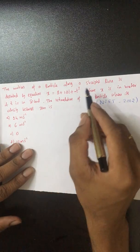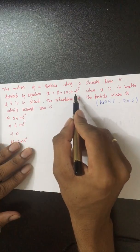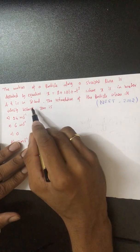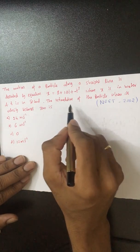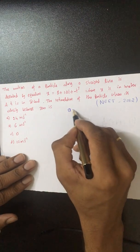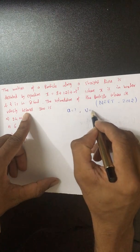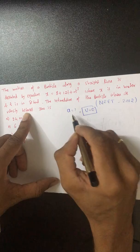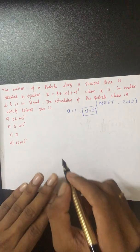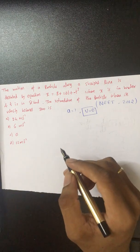We move to the next question. The motion of a particle along a straight line is described by x equals 8 plus 12t minus t cubed, where x is in meters and t is in seconds. The retardation of the particle when the velocity becomes zero — retardation is negative acceleration — what is the retardation at that condition? This was asked in 2012.